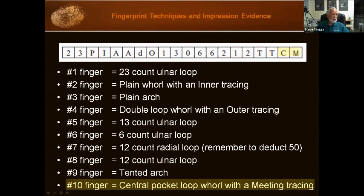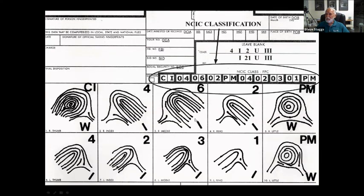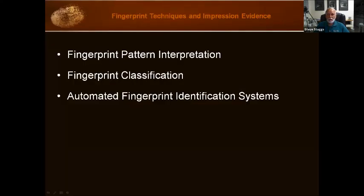That's how we fill out the NCIC classification — it goes right below the Henry classification on the card. Once again, blocking out your card makes it pretty simple. So there you have it — we just learned two fingerprint classification systems: the Henry system and the NCIC system.